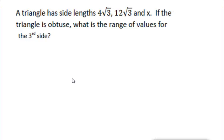Okay, in this problem, it says that a triangle has side length 4√3, 12√3, and x. If the triangle is obtuse, what is the range of values for the third side?